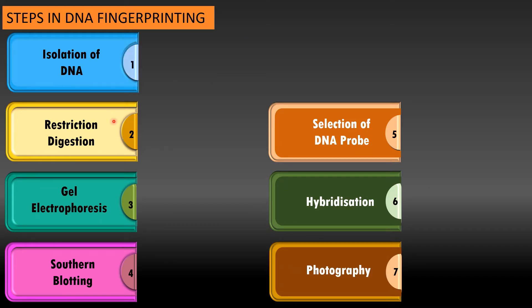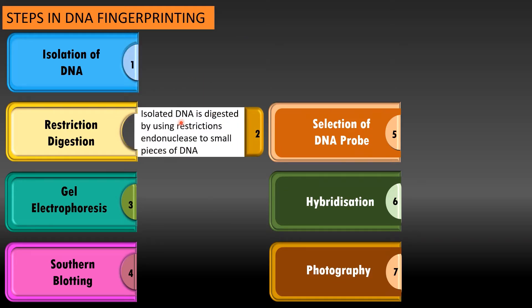Now this collected DNA are subjected to restriction digestion by using restriction enzymes. What these restriction endonucleases will do, they will simply cut the long DNA into smaller pieces.